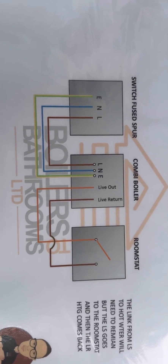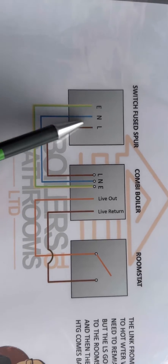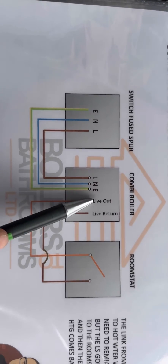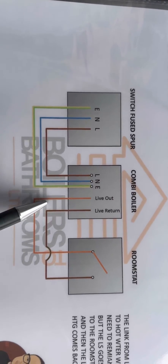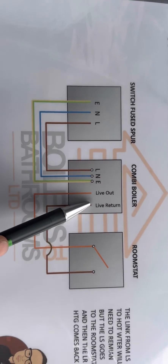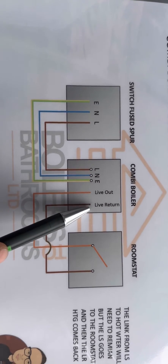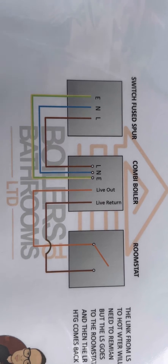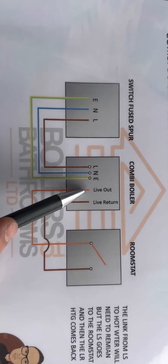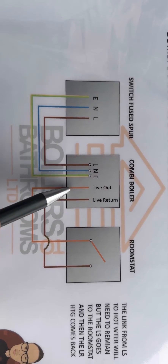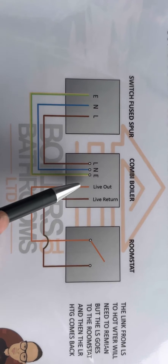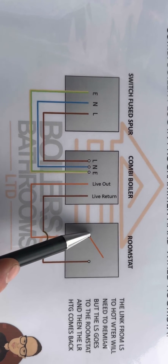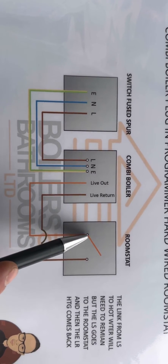This is basically what we just had in that scenario. It's a switched live - spare live, neutral, earth goes to the boiler, and then you've got a live out which is LS, and a live return which is LR. So when we were checking for 240 on LS, we were checking here, and that was sending it out - we got that.